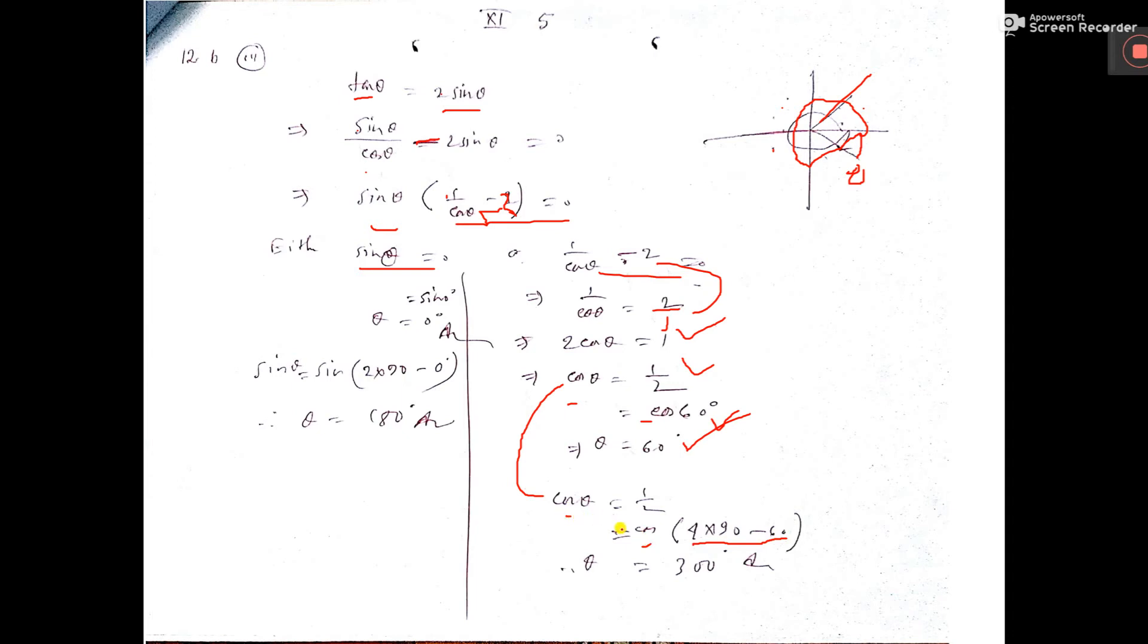So from the cosine case, we have two values: θ = 60° and θ = 300°. Now for sin θ = 0, we get θ = 0°.